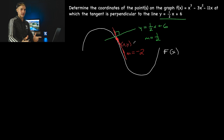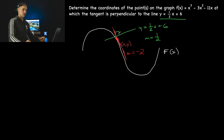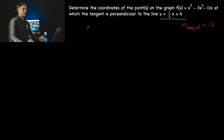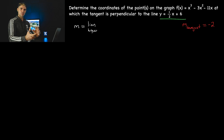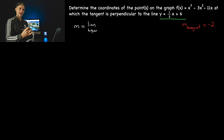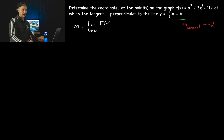This word problem could have been written as: determine the coordinates of the points on the graph f of x at which the tangent has a slope of negative two. There was just this extra step to test your understanding, which is why I drew the visual first. We're going backwards from what we've usually been doing — before, we were given specific points and had to find the slope of the tangent. Here, we're given the slope and have to find the points.